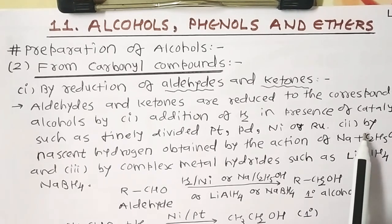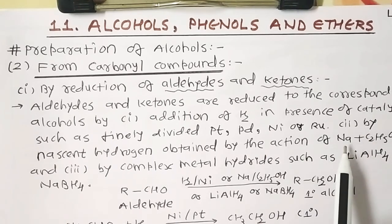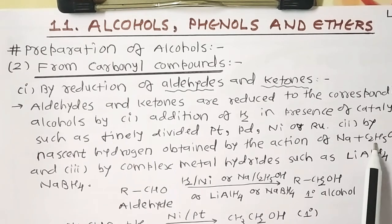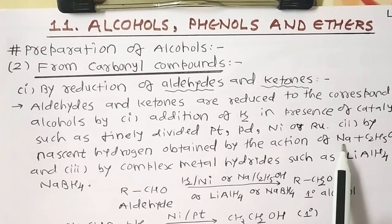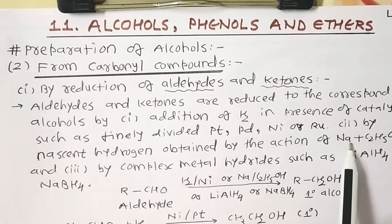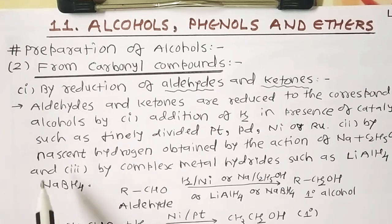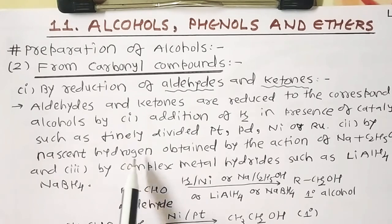Number two: hydrogenation can also be achieved by the action of sodium with ethanol. We know that alcohol is slightly acidic in nature due to the H delta-plus. It definitely reacts with sodium and is converted into C₂H₅ONa, liberating hydrogen gas. This hydrogen gas — a newly formed hydrogen — is called nascent hydrogen, and this nascent hydrogen reduces aldehyde and ketone into alcohols.